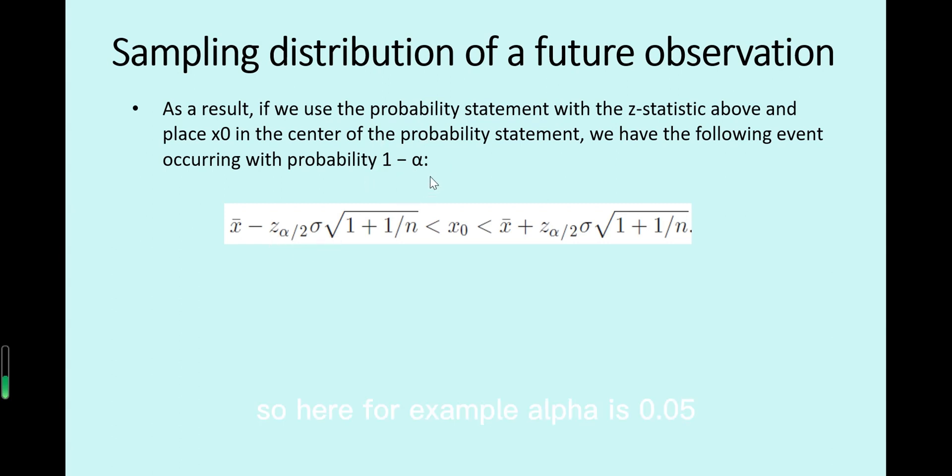So here for example α is 0.05 for the significance level. So 1 minus α is 0.95 for confidence. So we have the 95% confidence to say this future observation will stay between this lower bound and upper bound.